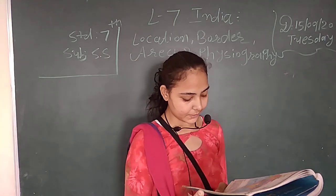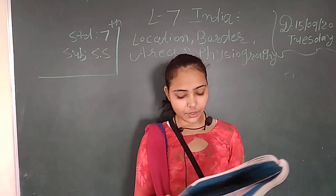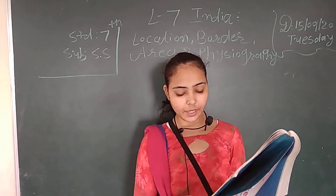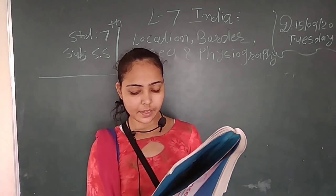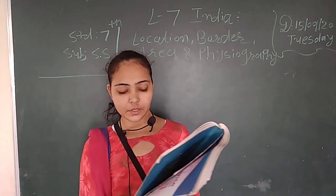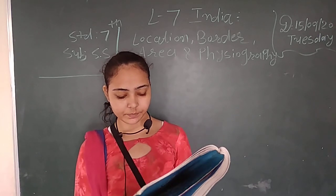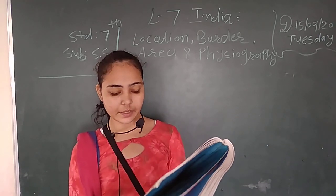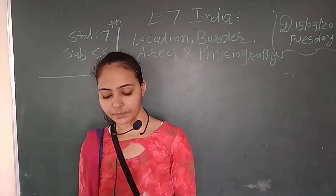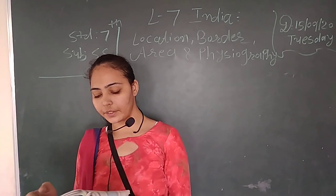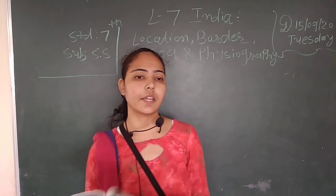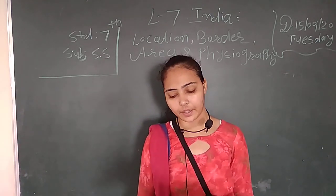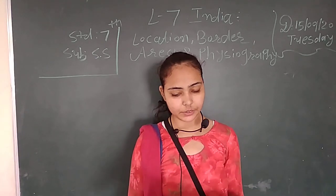India's shape is broader in the north and narrows towards the south. There are 29 states and 7 union territories, including New Delhi, the capital of India.